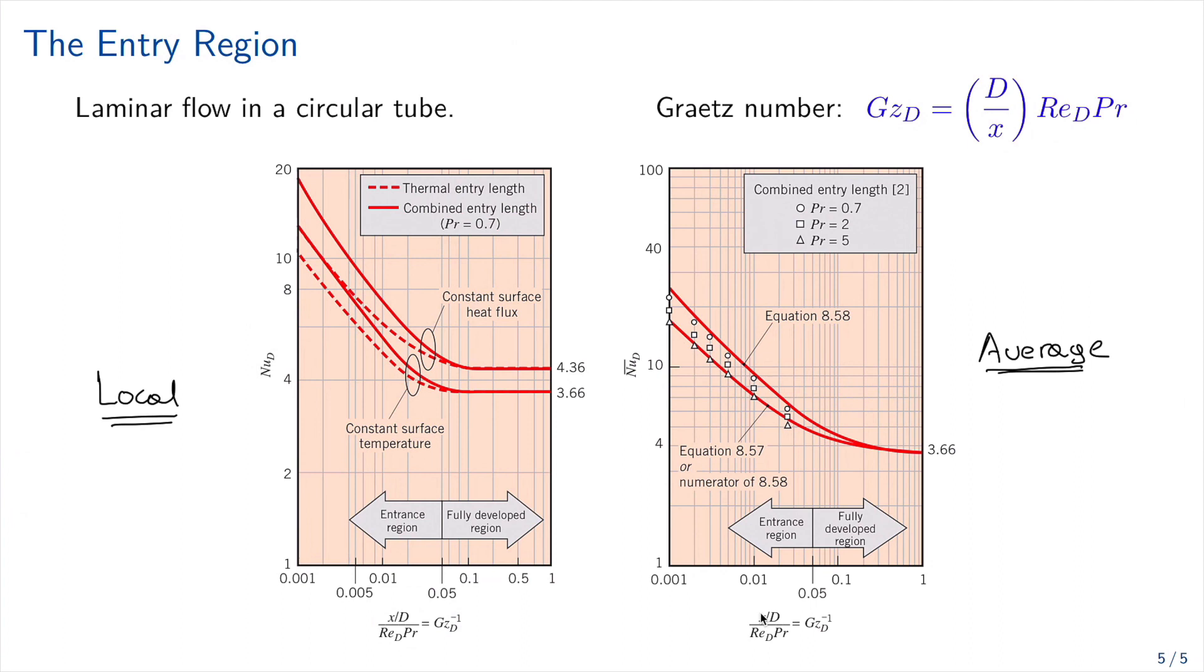On the top, the top lines corresponds to constant surface heat flux, and the bottom lines corresponds to constant surface temperature. So depending if we have constant surface temperature or heat, or we have a thermal entry or a combined entry, we use these different plots. So we can go and find our value.